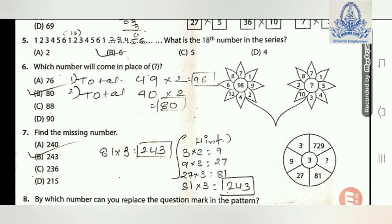Question 6: Which number will come in place of the question mark? Two flowers are given. For the first flower, add all the leaf numbers: two, four, seven, two, three, four, five, six, plus six, plus eight — the total of all leaves is 49. Since there are two flowers, multiply 49 by two to get 98.